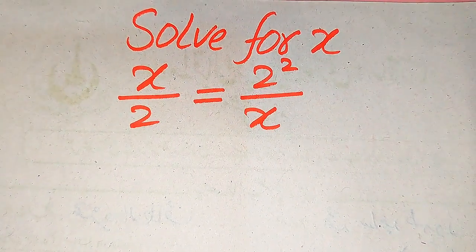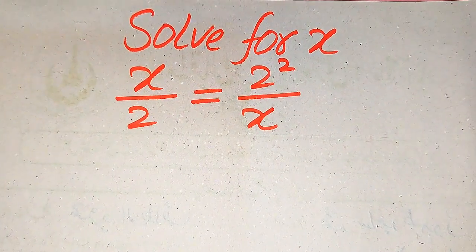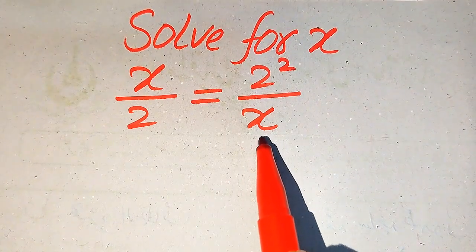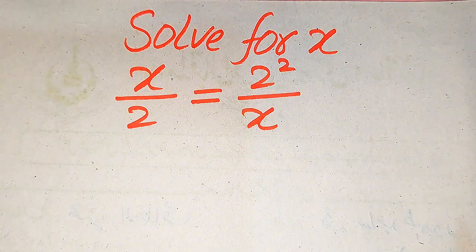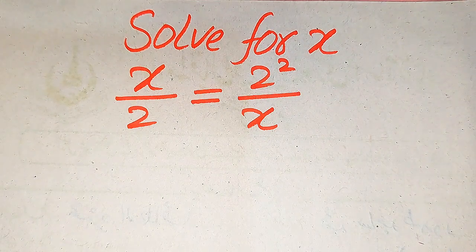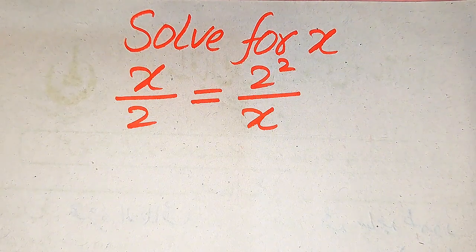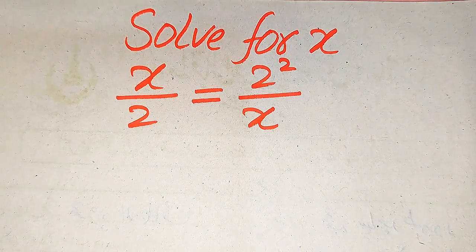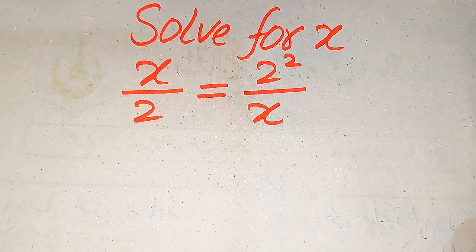Hello everyone. How to solve this problem for the values of x if we have x divided by 2 equals 2 squared divided by x. First we find all the roots of this equation, and at the end we will verify which of the roots are solutions and which are extraneous roots of the given equation. I can explain the difference between roots and extraneous roots at the end of this video, so please watch until the end.